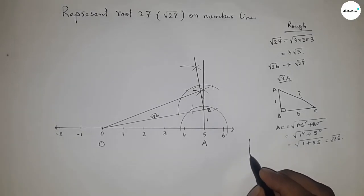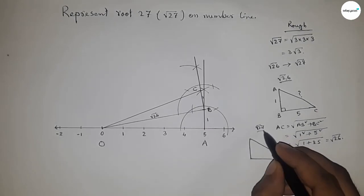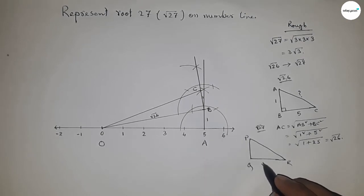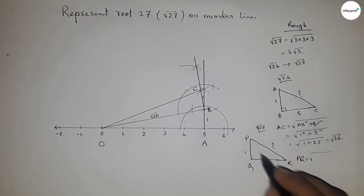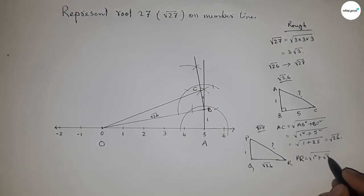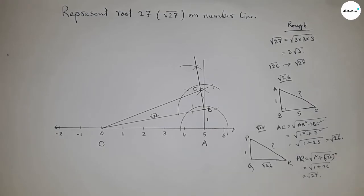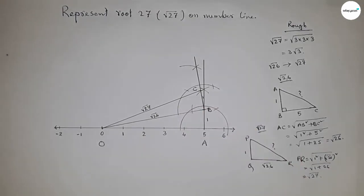Now discussing root 27: consider a right angle triangle PQR with base root 26 and height 1. By Pythagoras theorem, the hypotenuse PQ equals root of base squared plus height squared, which is root of 26 plus 1, giving root 27.